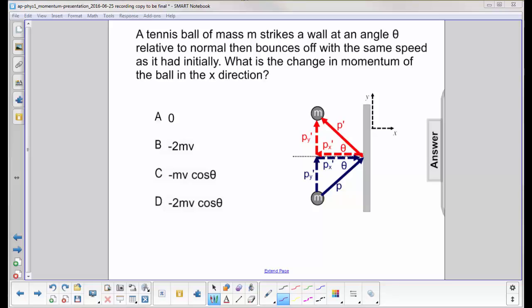A tennis ball of mass m strikes a wall at an angle theta relative to the normal. What's also important about this normal vector here is that it's providing a force. The wall is providing an external normal force to the ball.